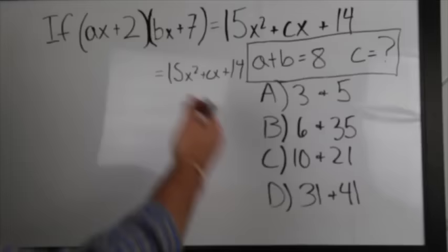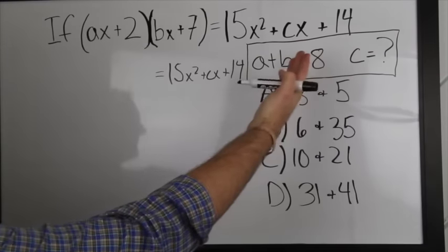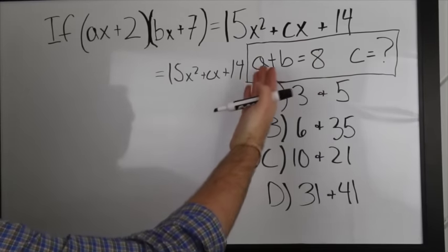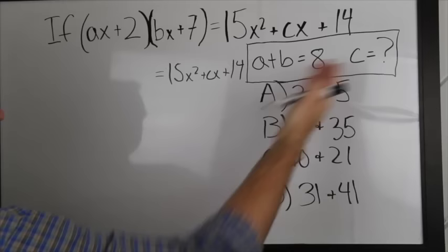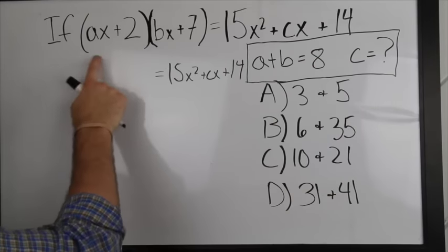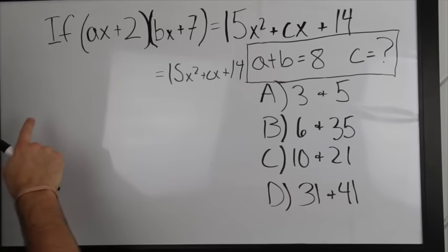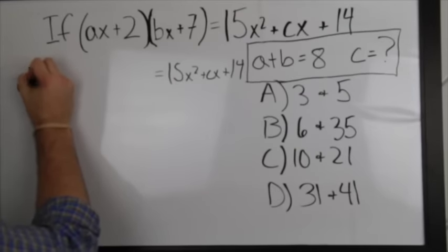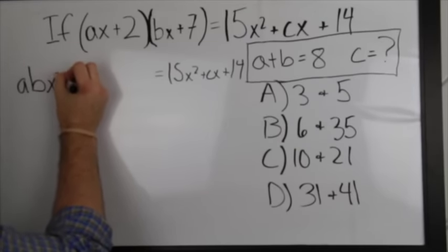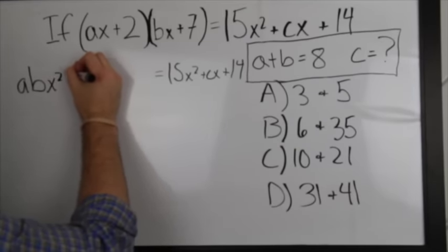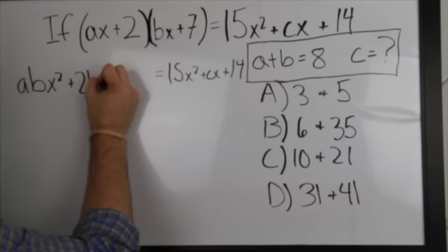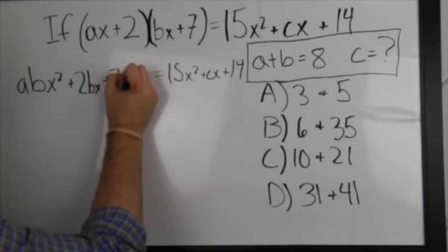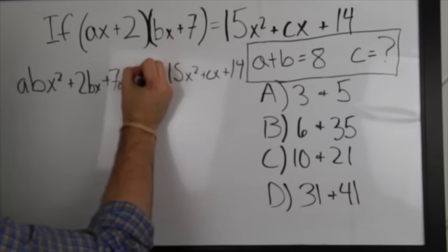So I've rewritten some stuff here, I've given us our main formula that we have, also the given information that a plus b equals 8, and we're looking for c. So the first thing we're going to do is we're going to foil out this first part of the equation here. We'll get abx squared plus 2bx plus 7ax plus 14.